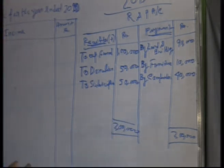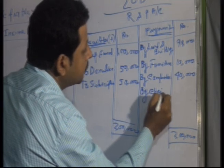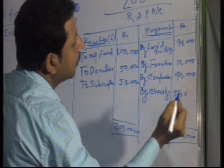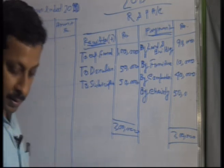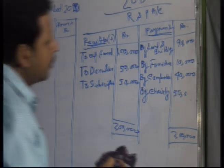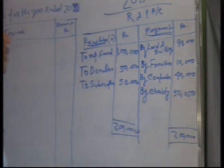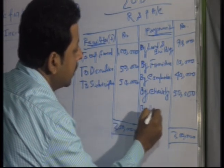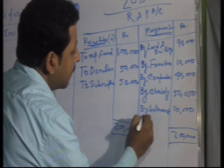So we will start the charity work. We spend some money for charity — say 50,000. That leaves 10,000, which is the balance carried down, meaning your cash in hand. So this is the cash in hand at the end of 2019.